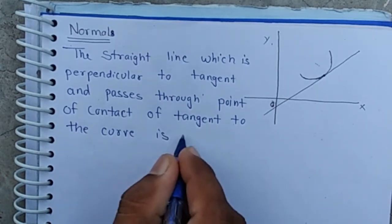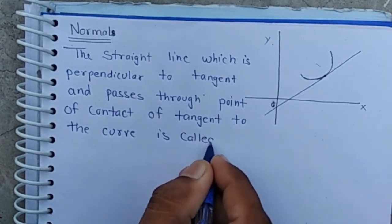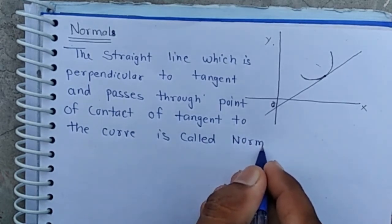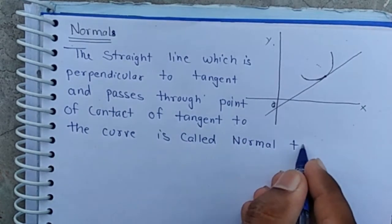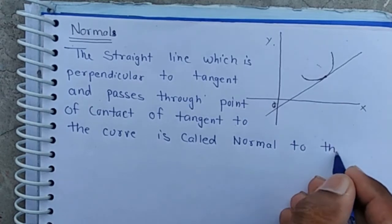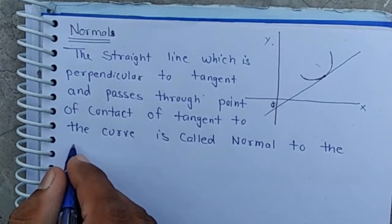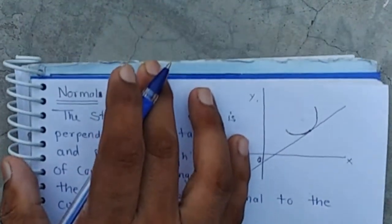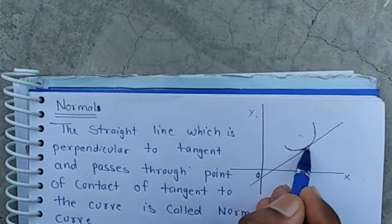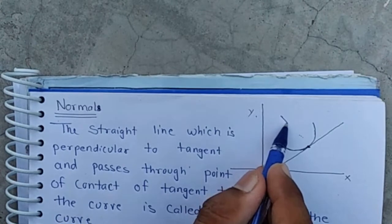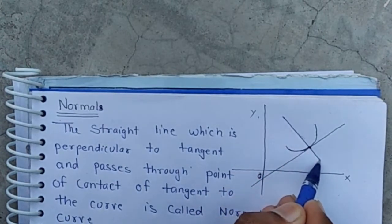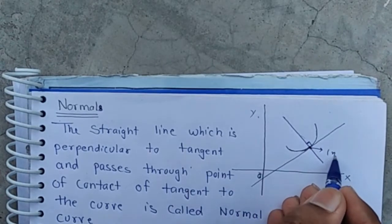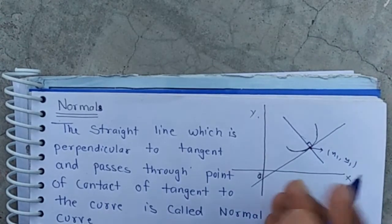is called Normal to the curve. Normal to the curve means normal is a straight line which is perpendicular to tangent and passes through point of contact x1 comma y1.